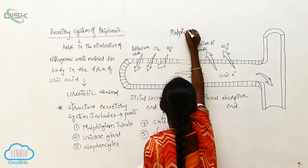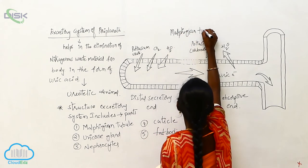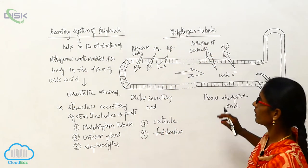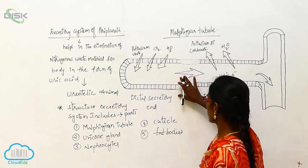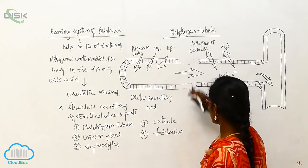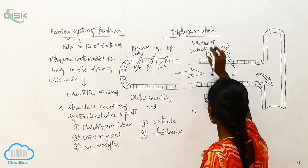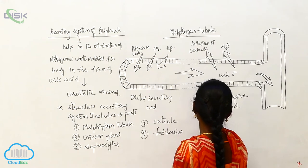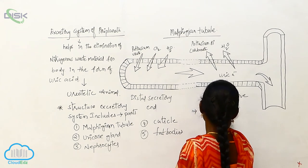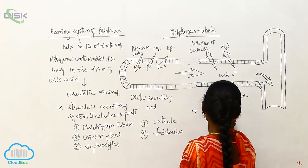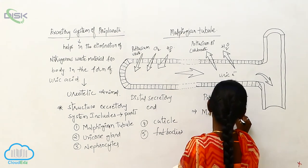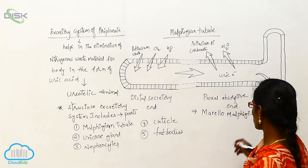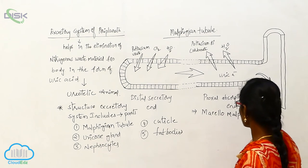The Malpighian tubules are used for the elimination of waste material. The word 'Malpighian tubule' was coined by Marcello Malpighi, who discovered and named these structures.